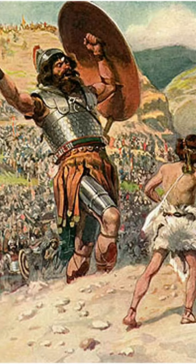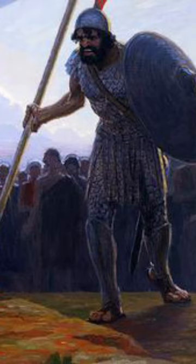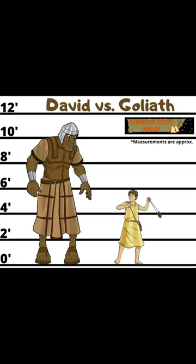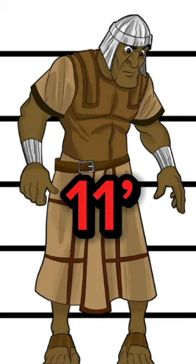It was typically 18 inches, but there was also a long cubit, which was 21 inches. This means there are two possible interpretations of Goliath's height. If we go by the normal cubit length, he was 9 foot 6. However, if we go by the long cubit length, he was just over 11 feet.